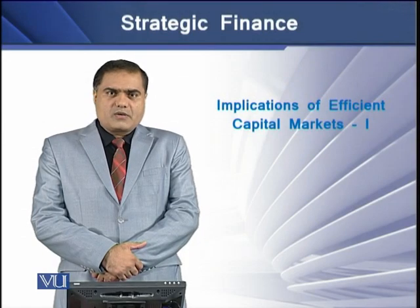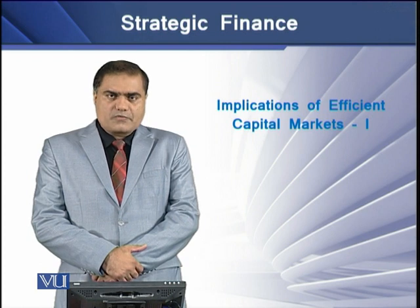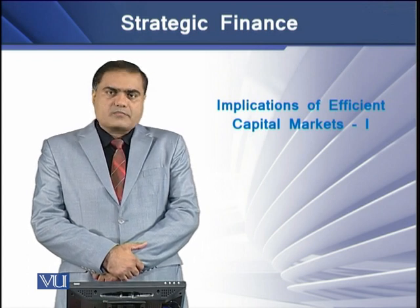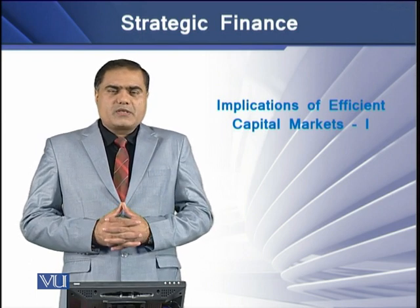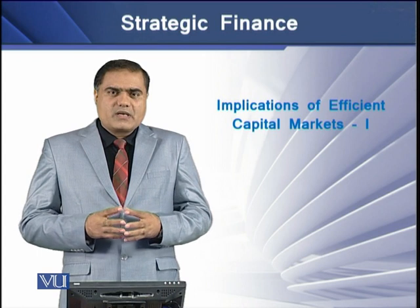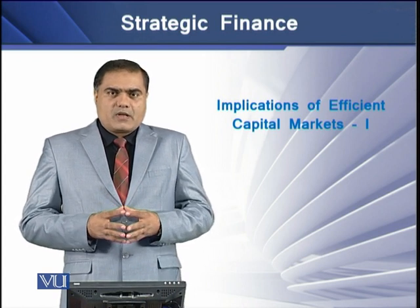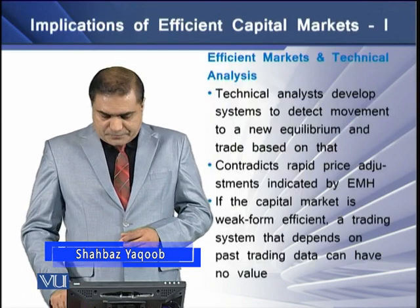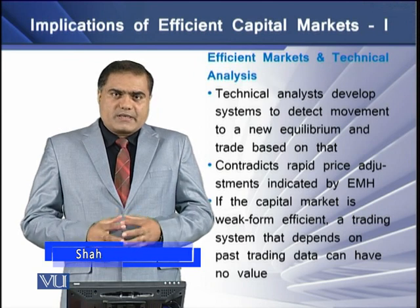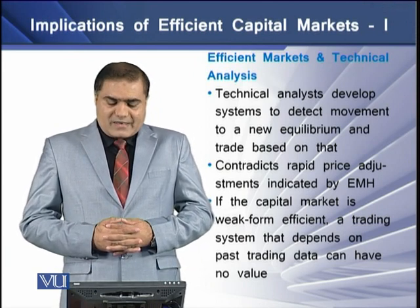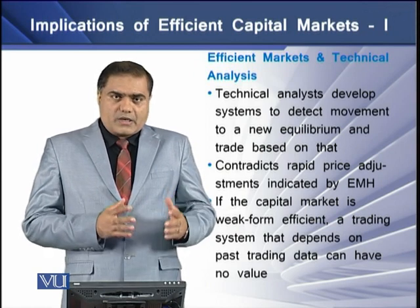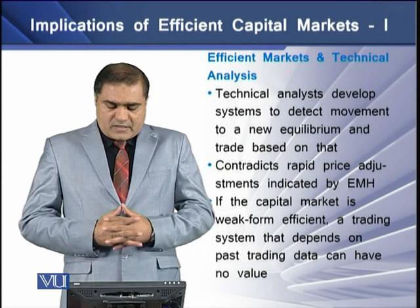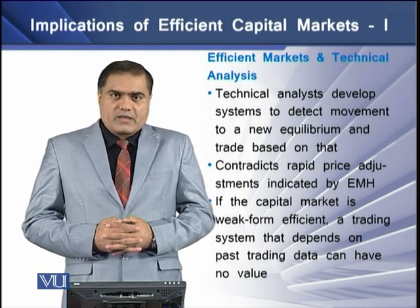Having mixed results from testing the three sub-hypotheses of the efficient market hypothesis in a capital market, it is important to consider the implications of these contradicting results. In the first case of technical analysis, technical analysts develop systems to detect movement to a new equilibrium, and any trade based on such equilibrium contradicts the rapid price adjustments indicated by the efficient market hypothesis.